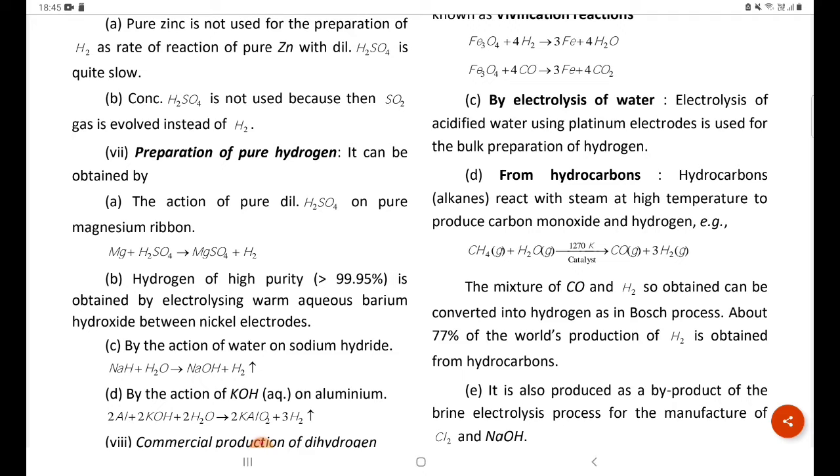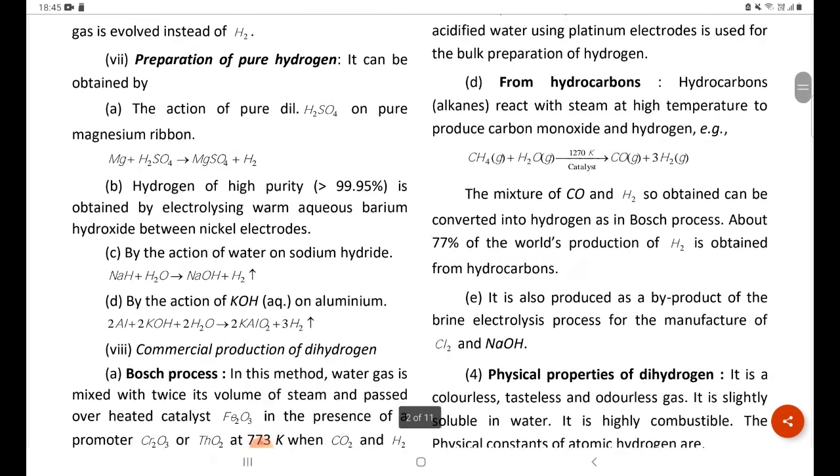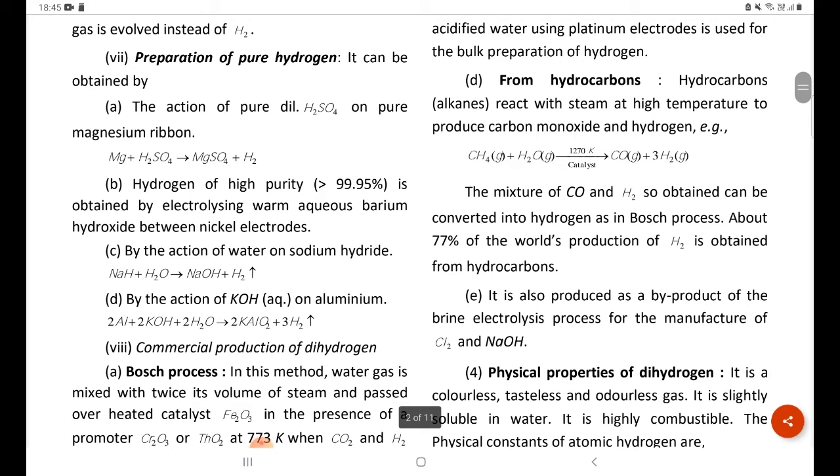The mixture of CO and H2 so obtained can be converted into hydrogen as in Bosch process. About 77% of the world's production of H2 is obtained from hydrocarbons.